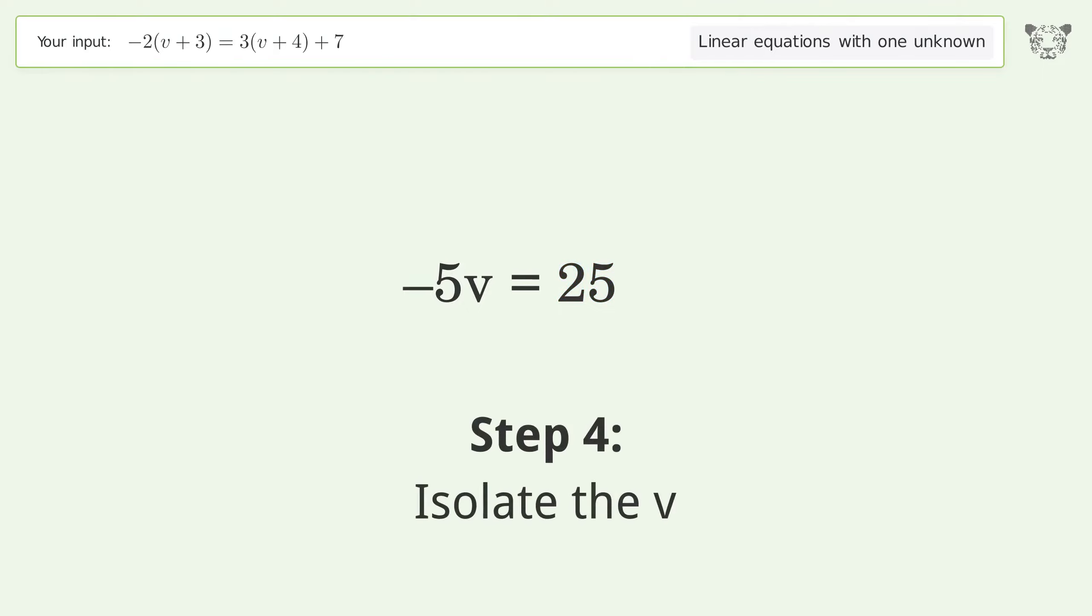Isolate the v. Divide both sides by negative 5. Cancel out the negatives.